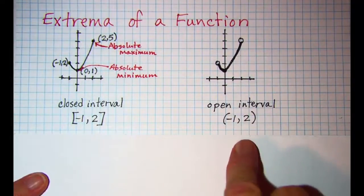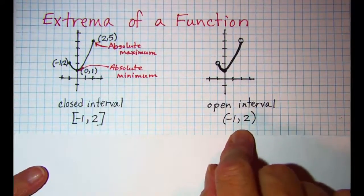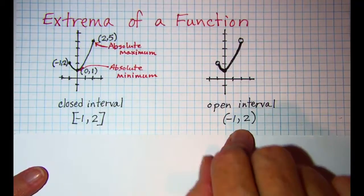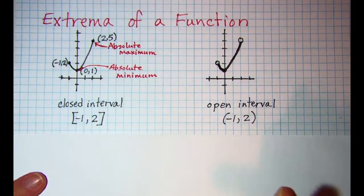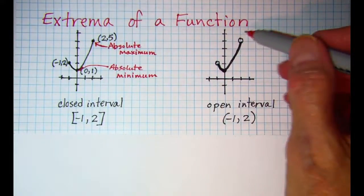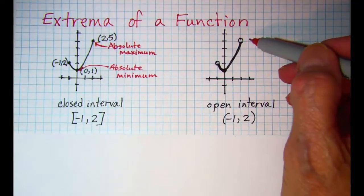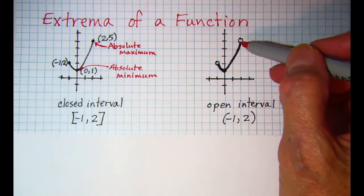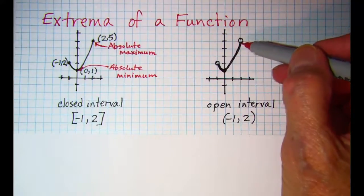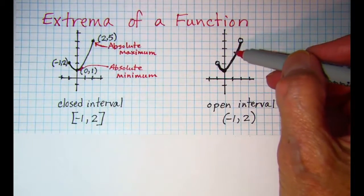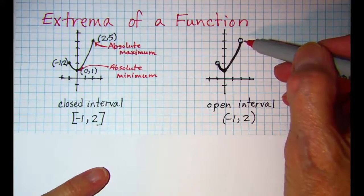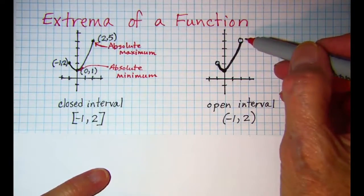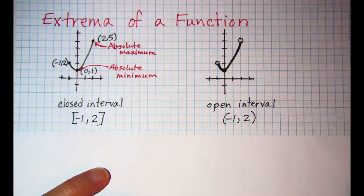Our next one is an open interval. It's the same curve x squared plus one, but this time the endpoints are not included. Now if we were going to try to pick a maximum, remember that on an open interval this endpoint is not included, so our curve is getting closer and closer to that point but we never actually reached that point. So we cannot specifically say that there is a maximum